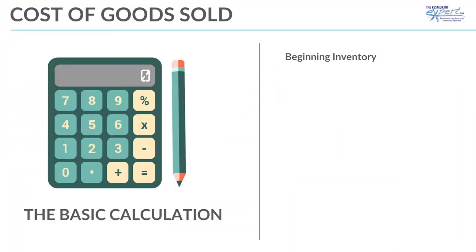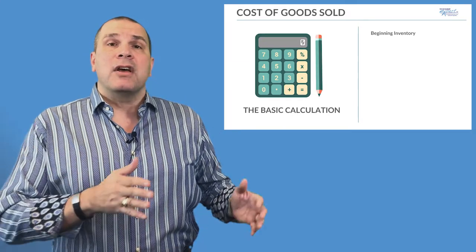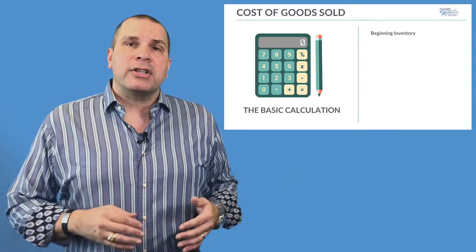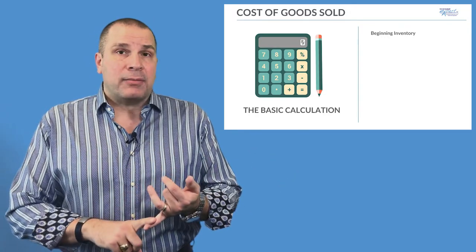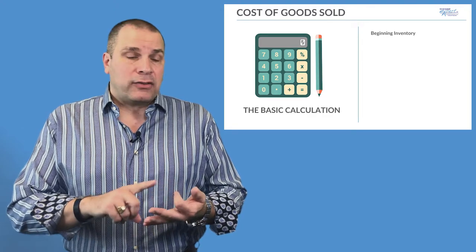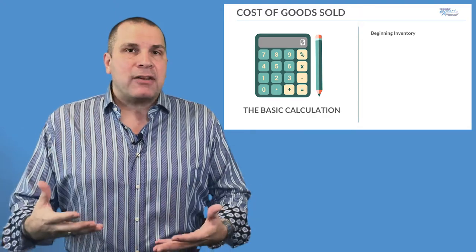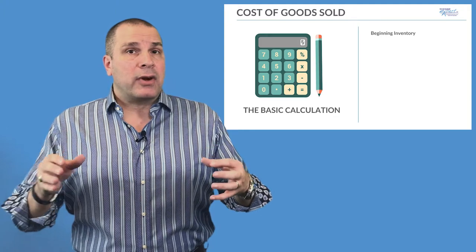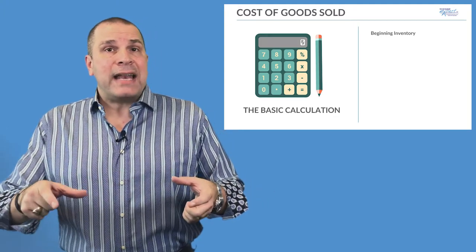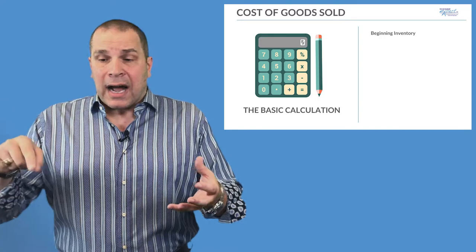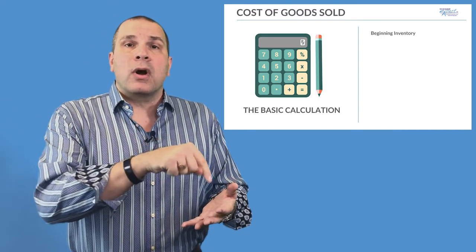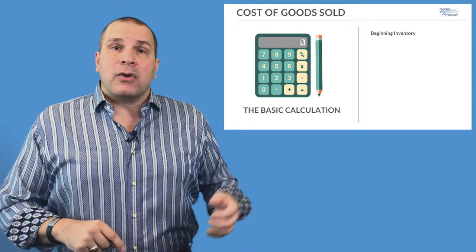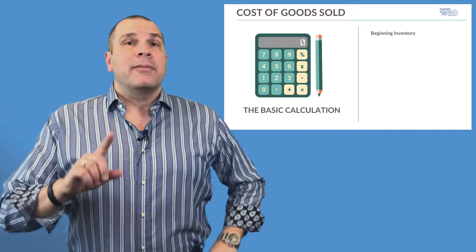It starts off with knowing your beginning inventory. Beginning inventory is what was on the shelves the last time you counted. That means we have to be taking inventory minimum on a monthly basis, preferably on a weekly basis, to know the value of everything on the shelves. That includes all of our batch items — meaning desserts, side dishes, soups, anything that I manufacture myself. For instance, if I have a tenderloin and I cut it up into fillets, I need to have a value for each one of those fillets so I can count it. So I have a beginning inventory of all the products I have on there.